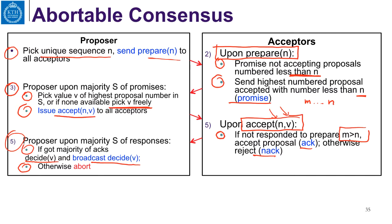Another observation: if a proposer gets a majority set S of promises and all have the same value, then that value is already chosen — the proposer doesn't need to reinforce this majority with a second phase. This is a possible optimization. With that, we end the high-level overview description of abortable consensus.